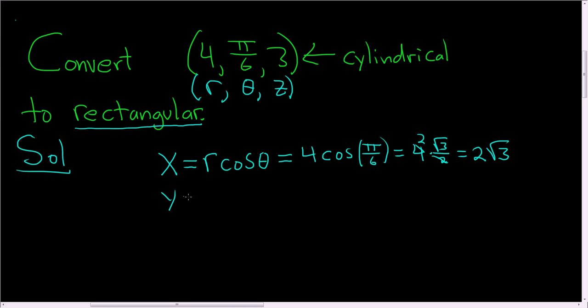To find y, it's the same as going from polar to rectangular: r sine theta. r is 4 and we have sine(π/6), so we get 4 times sine(π/6). The sine of π/6 is 1/2, which simplifies to 2.